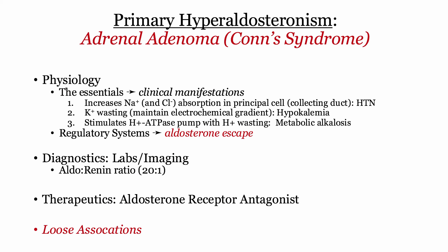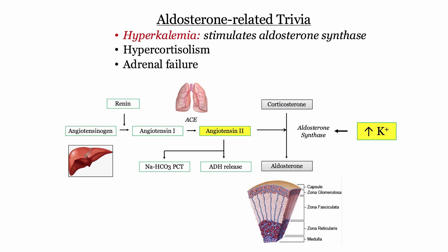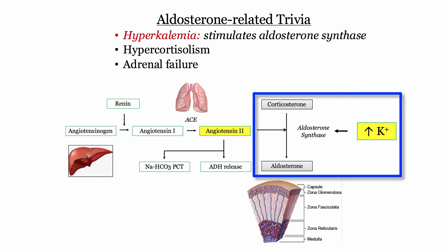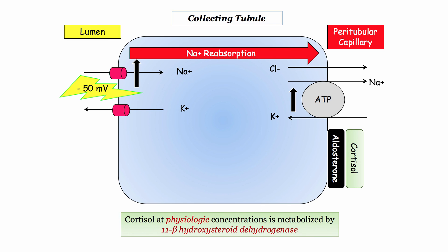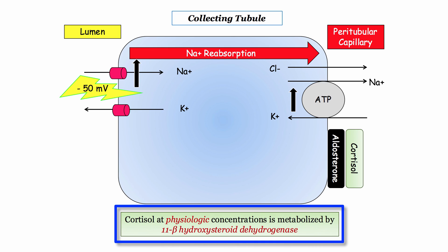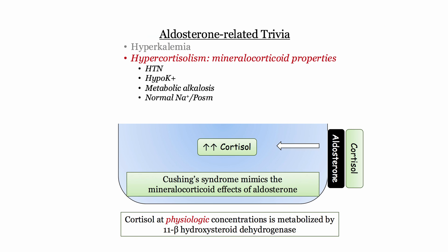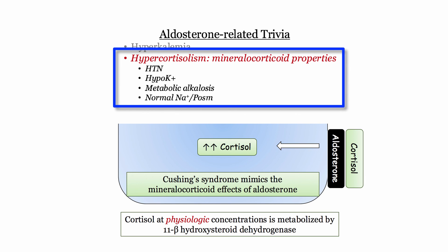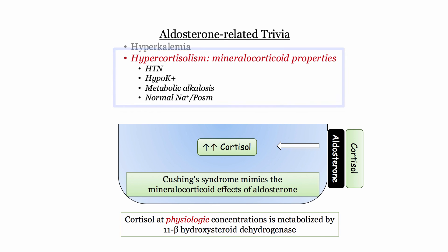It's worth looking at three quick but loose associations. First, hyperkalemia can directly stimulate aldosterone secretion through upregulation of aldosterone synthase. More importantly, cortisol can bind the mineralocorticoid receptor. Under normal circumstances this is not clinically relevant, as cortisol is readily metabolized by local tissues into inactive metabolites. However, in Cushing syndrome with high cortisol levels, the mineralocorticoid effect outstrips the deactivation, and we see the same properties of hypertension, hypokalemia, and metabolic alkalosis as seen in hyperaldosteronism.